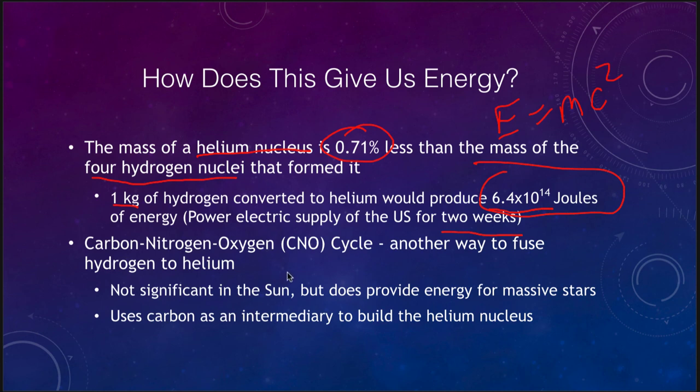There is another cycle called the CNO or the carbon-nitrogen-oxygen cycle. It is not significant in stars like the Sun, but it does provide energy for more massive stars. It uses carbon as an intermediary to build the helium nucleus. You start with a carbon nucleus and add protons to it, building it up into nitrogen and then oxygen. Then the helium nucleus splits off. You have the same net process as the proton-proton chain: four hydrogen nuclei into one helium nucleus. The carbon is just used as a catalyst.